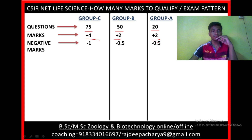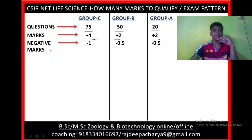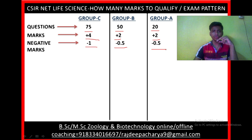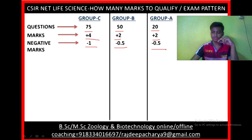If you attend a wrong answer from Group C, there will be a negative marking of minus 1. The negative marking for Group B is minus 0.5, and the negative marking for Group A is also minus 0.5.